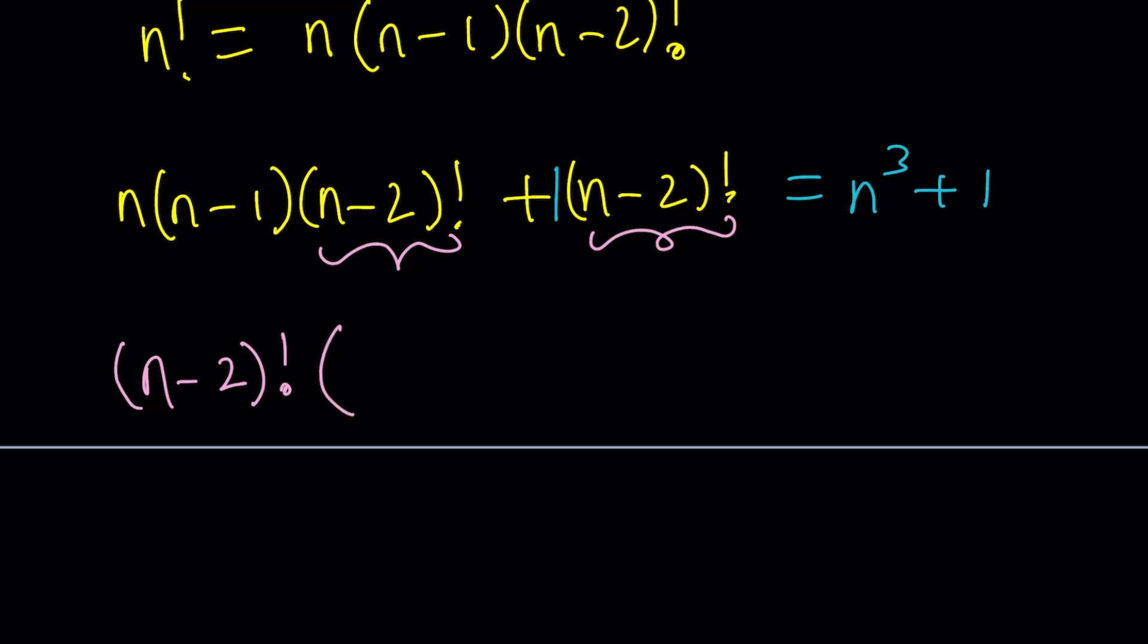Now, we have inside n times n minus 1. If you distribute, you're going to get n squared minus n plus, you see the blue one? That's going to go here. That's why it's important to write 1 because when you don't write it and when you take out an n minus 2 factorial, there's nothing left. So, should I write a 0? No. We are talking about a product. So, you should always write 1 as a placeholder. 0 is used for addition and subtraction. Well, subtraction is addition, so it doesn't matter.